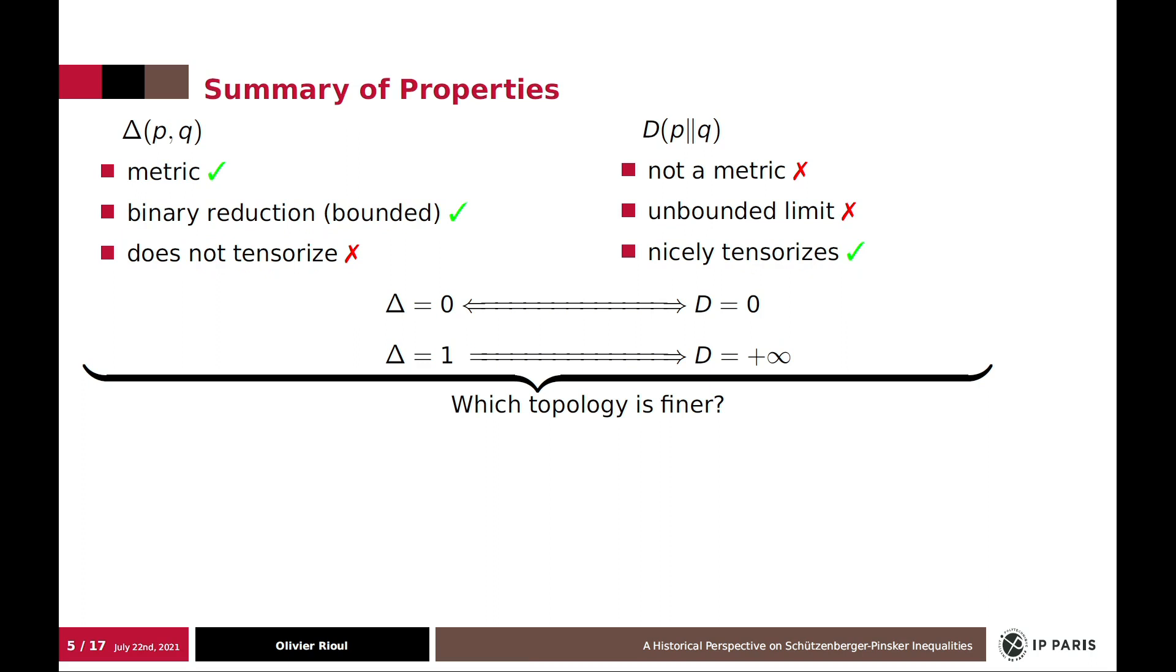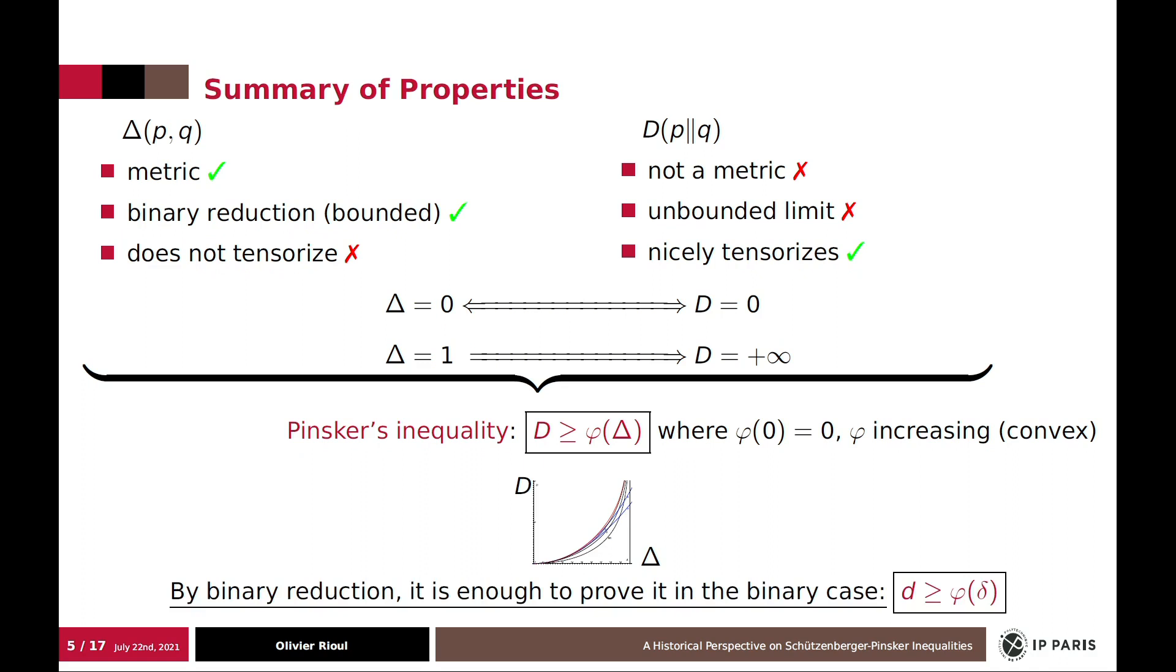The Pinsker inequality is about trying to connect the two. And ask the question, which topology is finer? Pinsker inequality takes this following form. It's a lower bound on divergence as a function of the total variation distance. Where phi is typically increasing and convex. This means that if divergence is small, then delta would also be small. And therefore, the kind of topology defined by divergence is finer than the one defined by total variation. Which was the basic classical result of Pinsker.